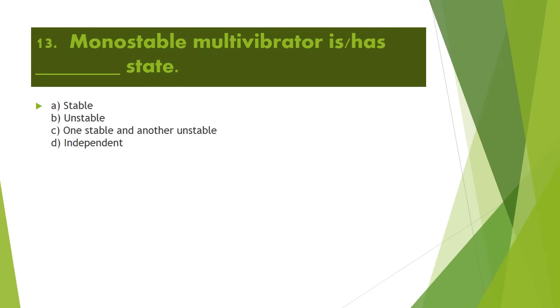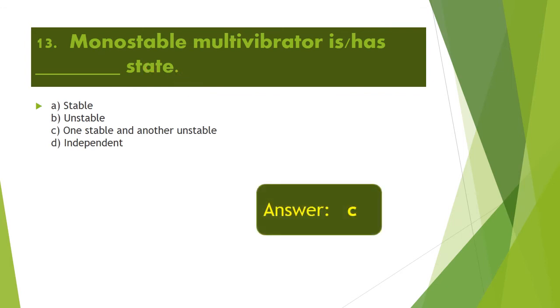Next question: A monostable multivibrator has how many stable states? A monostable multivibrator has one stable state and one unstable state. Therefore, Option C is the right answer.